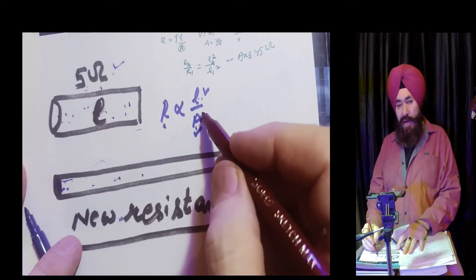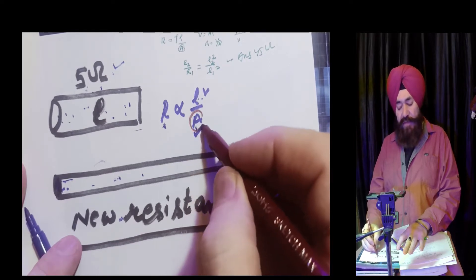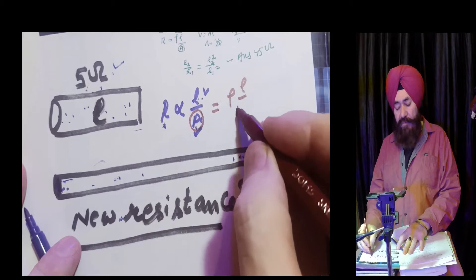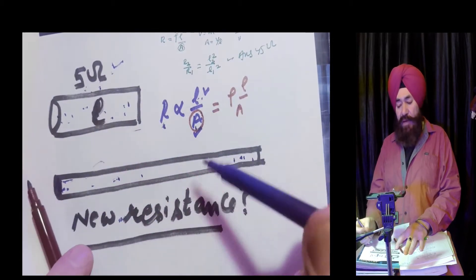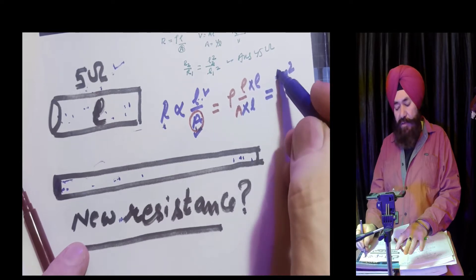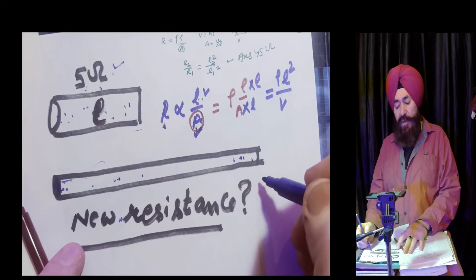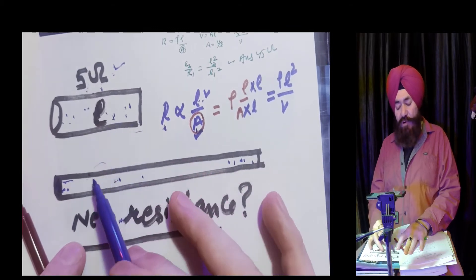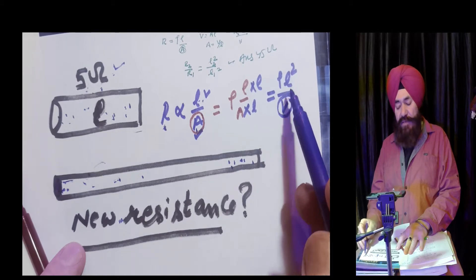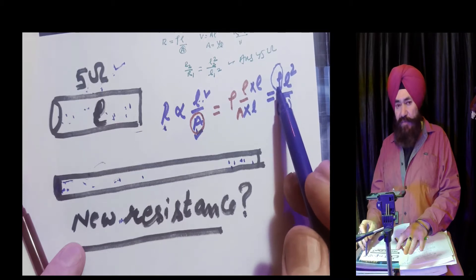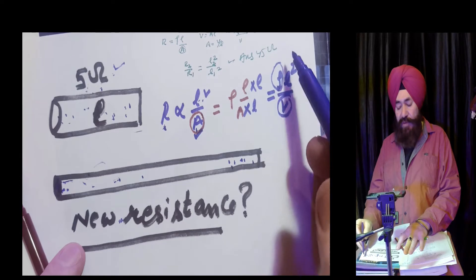I am going to use a formula which is independent of area. R equals rho times L upon A. I multiply and divide by L, so this becomes rho times L squared upon volume. Now when the length is made double, there will be no change in volume — it will remain constant. And resistivity rho is also constant, being independent of length and area of cross section.